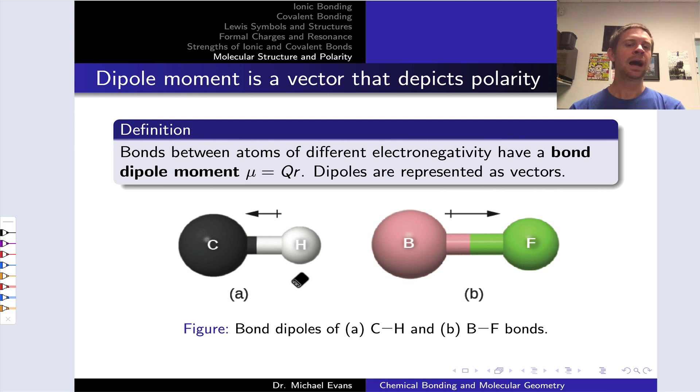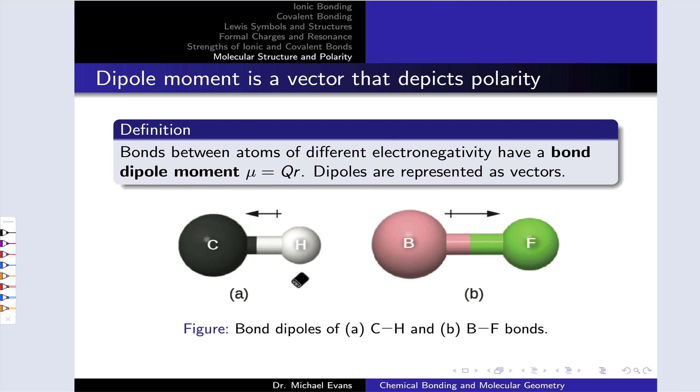To begin, I want to return back to the idea of electronegativity and the polar covalent bond. Bonds that link atoms of different electronegativity have a non-zero bond dipole moment. When we say dipole moment, we're referring to a separation of charges in space.